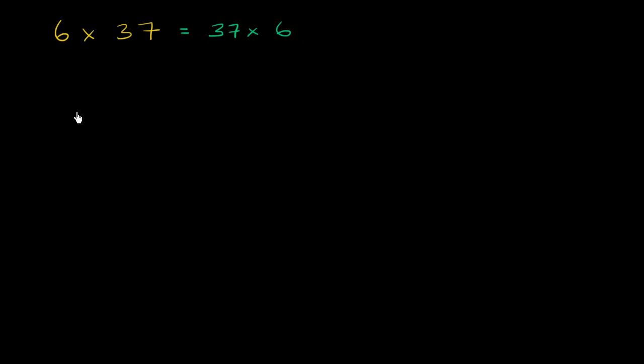So what I like to do is I take the larger of the two numbers, and I write it on top. So I'll write 37, and then the smaller of the two numbers, which is 6, I'll write it on the bottom, and I'll align it by the correct place.